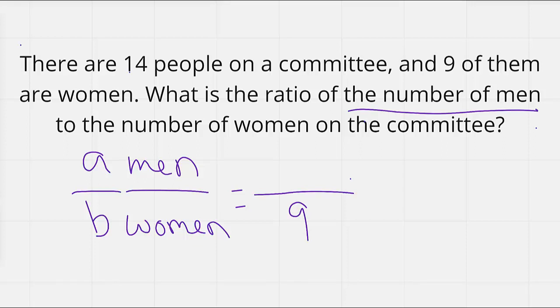So that means we need to figure out how many men there are. Well, if there's 14 total people, and we know that 9 of them are women, in order to figure out how many men there are, all we have to do is 14 minus 9, which is going to give us 5. So 5 of those people are men, whereas 9 of them are women.